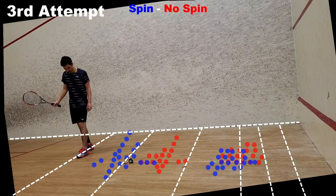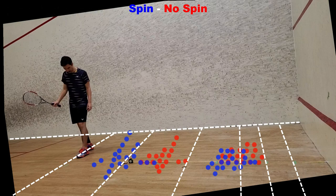In my third attempt, I reversed the order I was performing the shots in. This time I started with spin drops. Now to be honest, this result threw me off the trail a little bit. You can see that I am getting more consistent now with each shot. The shots with spin are definitely landing further back in the court. The shots with no spin, on average, landed slightly closer to the front wall, but not significantly closer.